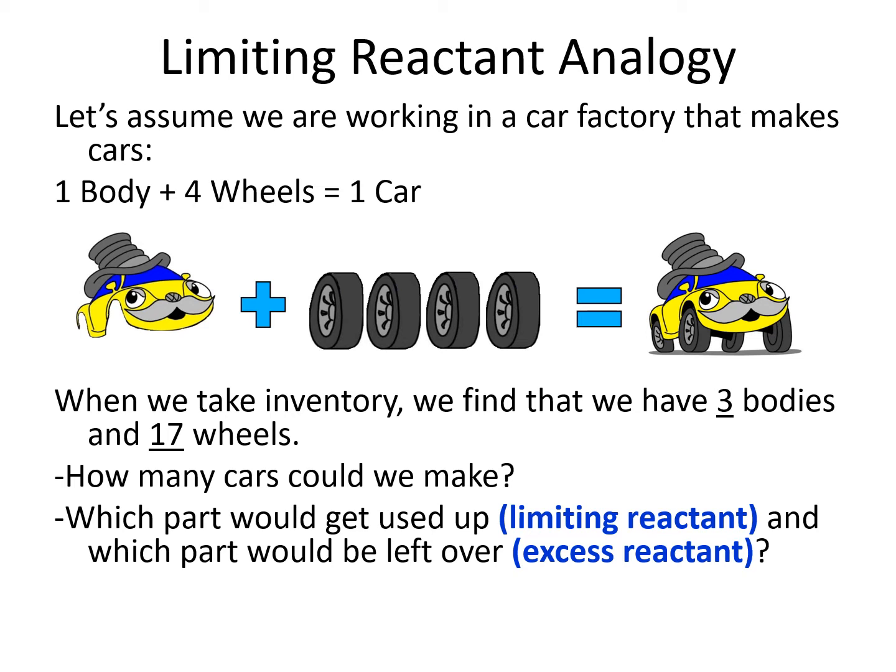After we use up our three car bodies, we can't make any more cars. But we would only need 12 out of our 17 wheels to make our three cars. There are plenty of wheels, but after three car bodies, we can't make any more cars. That means the limiting reactant is going to be the car bodies, and the excess reactant — the part that's left over — is the wheels.